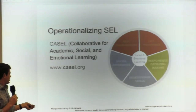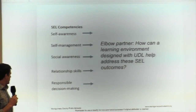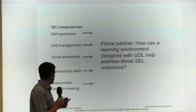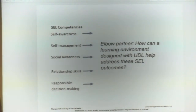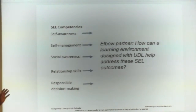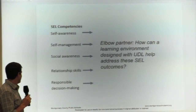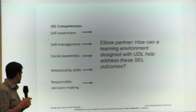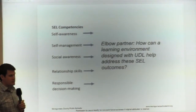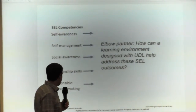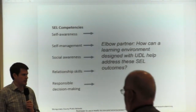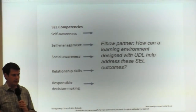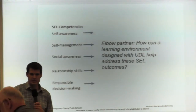There are five CASEL competencies: self-management, self-awareness, responsible decision-making, relationship skills, and social awareness. We'd like you to pick one that you can draw some understanding from by the name alone, and talk to some people next to you about how a learning environment designed with UDL can help address these specific outcomes and changes in students. We want to hear a little bit about what you've seen or believe in this area.